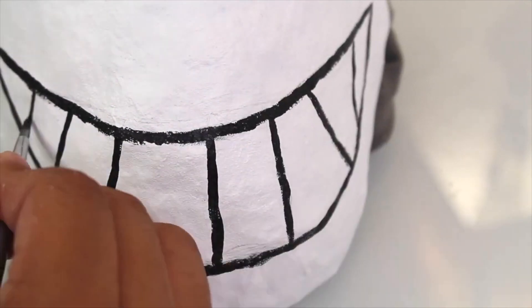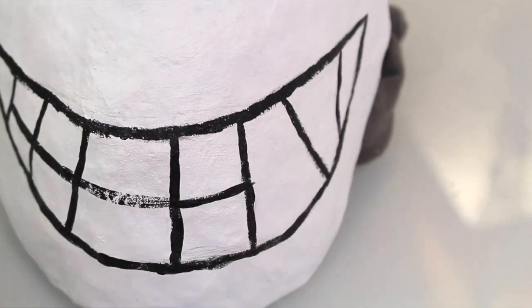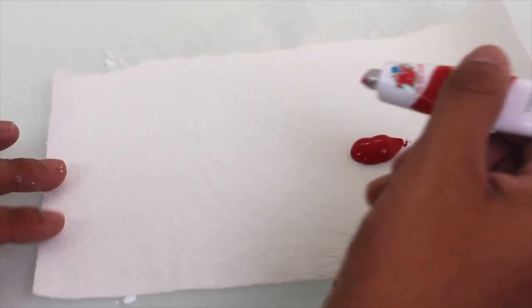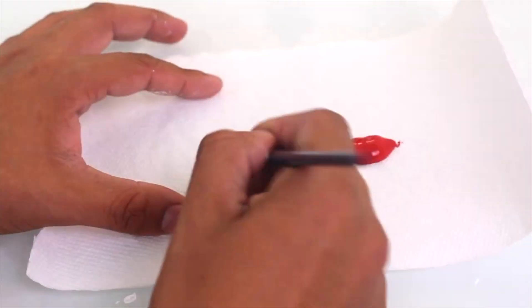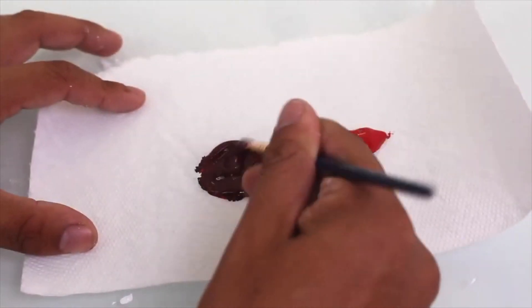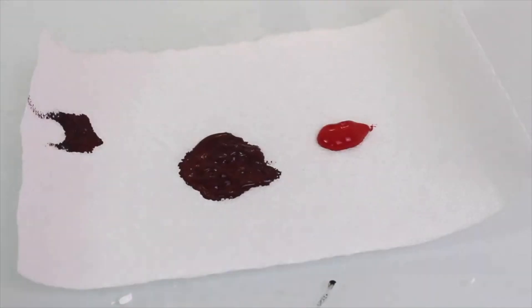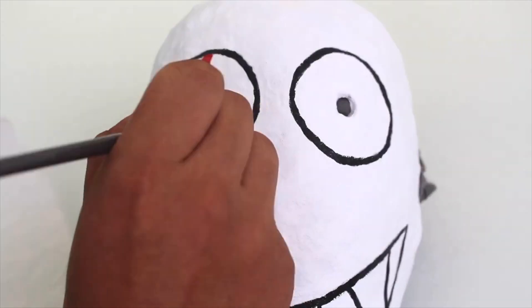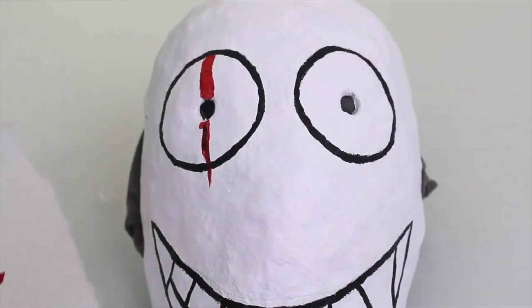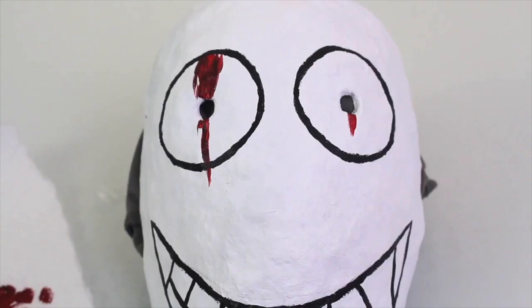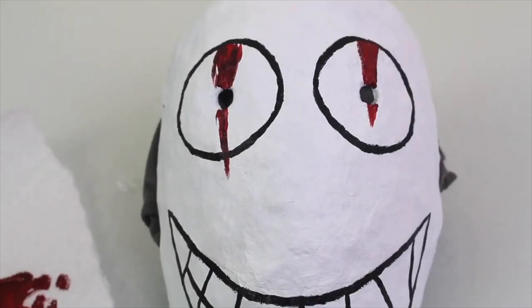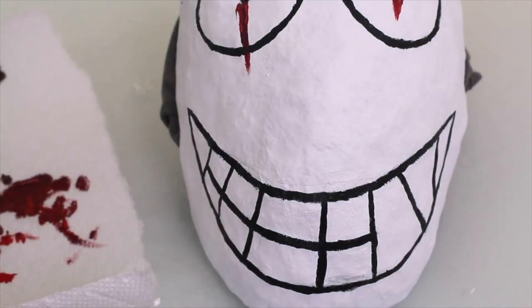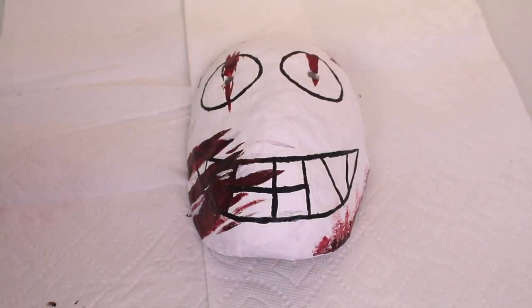For the blood on the Legion mask, I mix red with a pinch of black paint together to get a darker red color. The Legion has blood on the left side of his smile and the red lines down his eye holes. Also I added a few blood splatters along the mask and let it all dry.